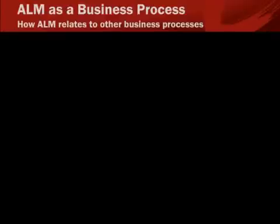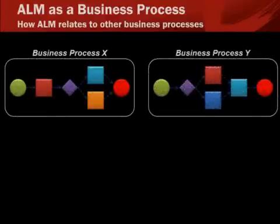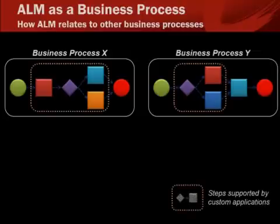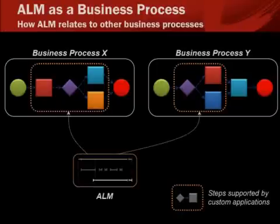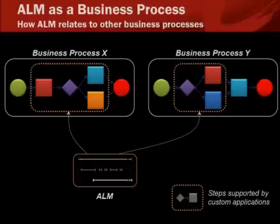But ALM is not just about making other business processes better — ALM itself is a business process. Think about this: Business Process X and Business Process Y are each supported by custom applications. Some steps in the processes rely on code. But that code, those custom apps, is itself the product of a business process called ALM. The process of creating and running custom apps is itself critical to the business. In fact, ALM supports many other business processes, which makes it all the more critical.